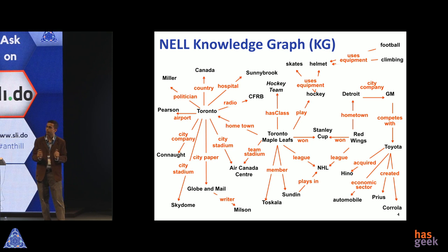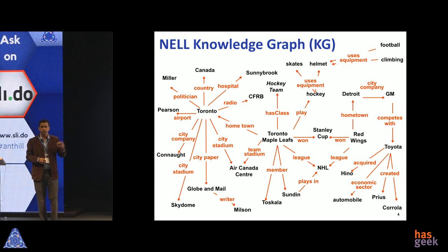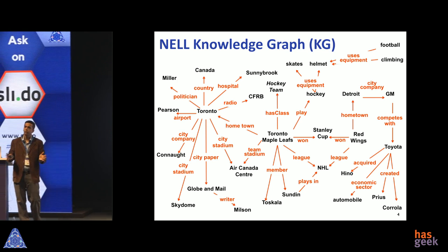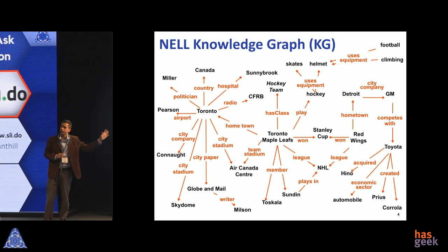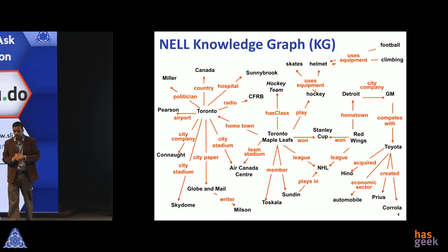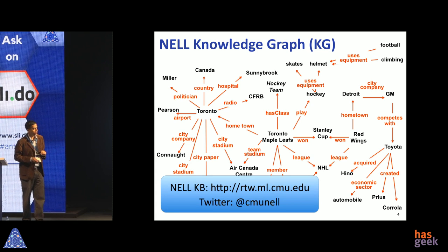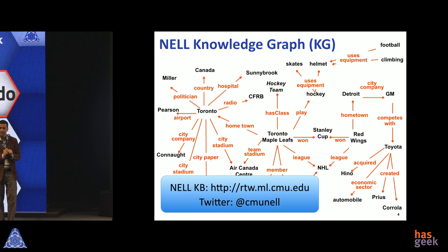What you see here are nodes representing objects — for example, Toronto Maple Leafs, whose hometown is Toronto, who play hockey, and who won the Stanley Cup. I was part of that project before joining IISc, and we continue doing that line of research in my group here. I won't be going into the details of how NELL works since that's a whole other talk. If you're interested, visit rtw.ml.cmu.edu — where RTW stands for Read the Web — as ambitious as that sounds.